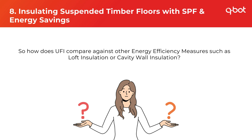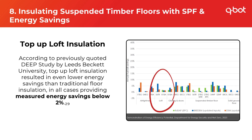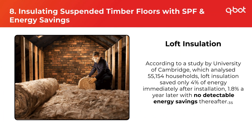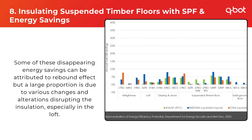How does spray foam underfloor insulation compare against other energy efficiency measures such as loft insulation or cavity wall insulation? According to Leeds Beckett University, top-up loft insulation provided measured energy savings below 2% in all cases. A University of Cambridge study analysing over 50,000 households showed loft insulation saved only 4% of energy immediately after installation, 1.8% a year later, and no detectable savings thereafter. Cavity wall insulation was marginally more effective with an initial saving of 7%, dropping to 4% after a year and below 2% thereafter.